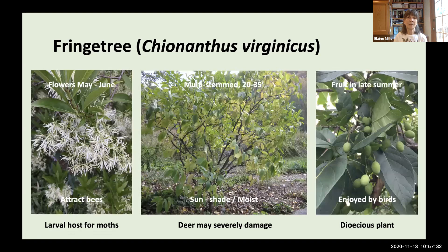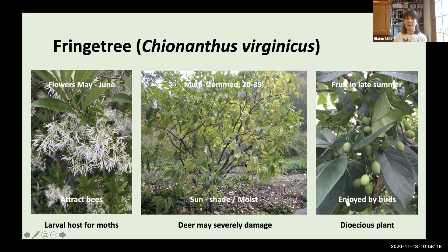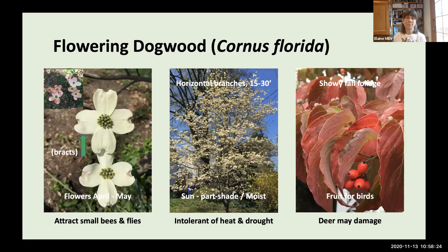Fringe Tree, Chionanthus virginicus, is a multi-stem tree 20 to 35 feet tall growing in sun to shade with moist soil. It has flowers from May to June attracting bees, and its foliage serves as a larval host for moths. It's dioecious — you'd want both male and female for the female to bear fruit. It actually looks a bit like olive and is in the olive family. Deer may damage this tree. Flowering Dogwood, Cornus florida — our state flower — is familiar with its horizontal branches, about 15 to 30 feet tall, better in part shade with moist soil.